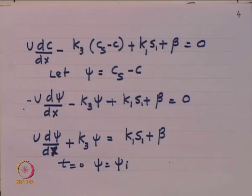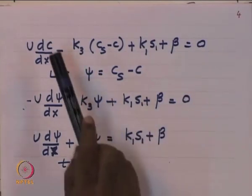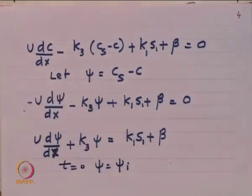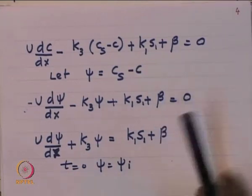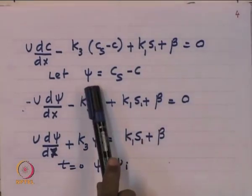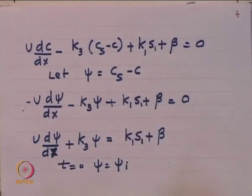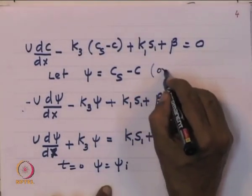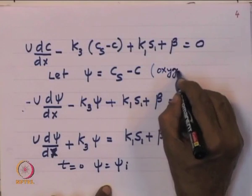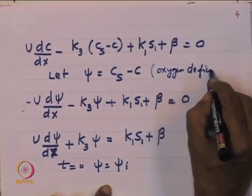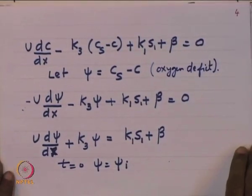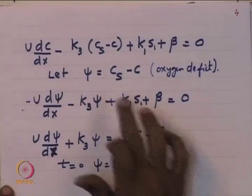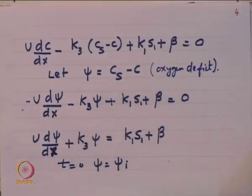The differential equation describes what goes on in the river: the rate of change of dissolved oxygen in water with respect to distance. Sanitary engineering literature uses the symbol psi for oxygen deficit, defined as the difference between saturation solubility Cs and the present concentration c. Substituting this definition transforms the equation into the standard oxygen sag form.